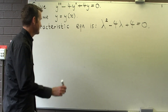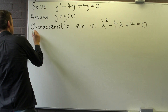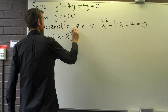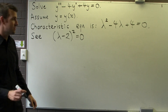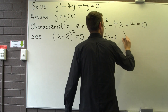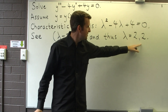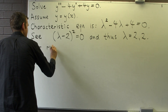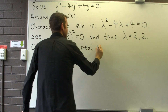So what we're going to do is solve this characteristic equation. Notice the left-hand side is just a perfect square, so we can rewrite it in the following form. This gives us a double root, or a repeated root, lambda equals 2. We have repeated roots and they're both real numbers.